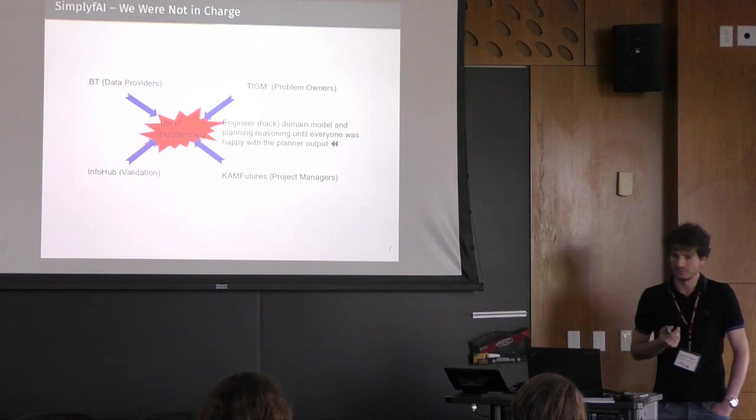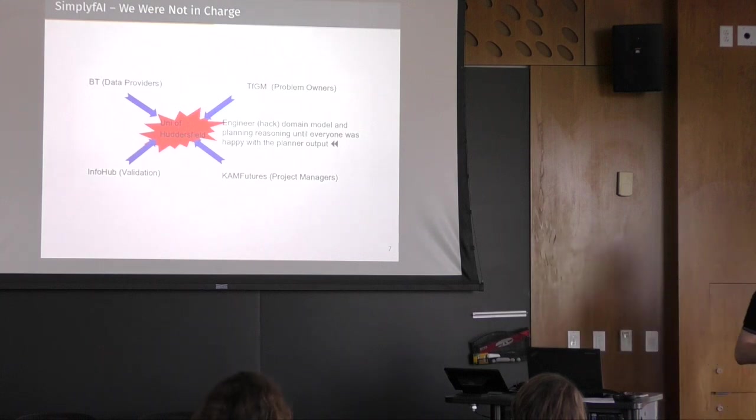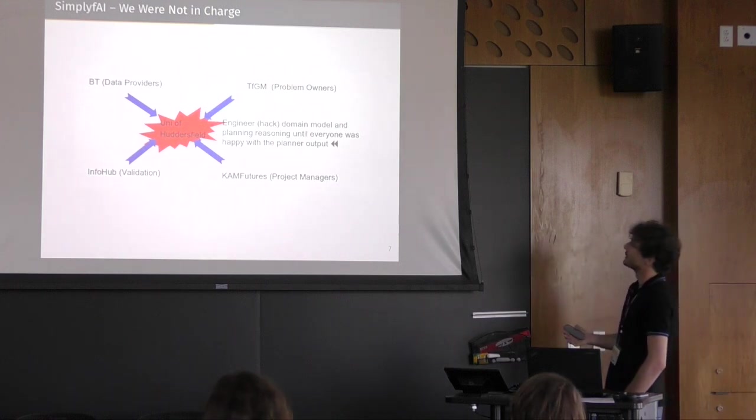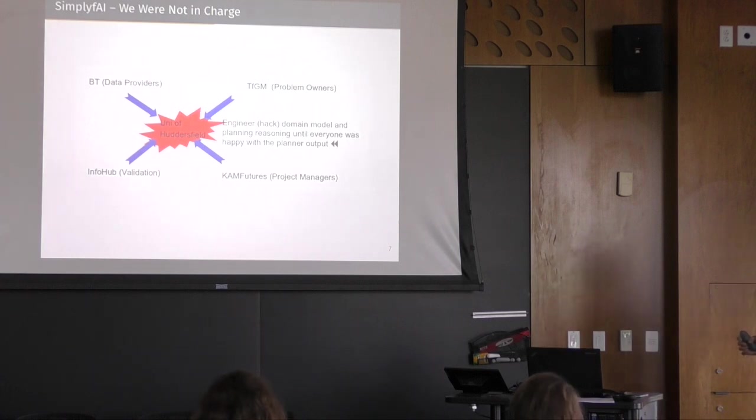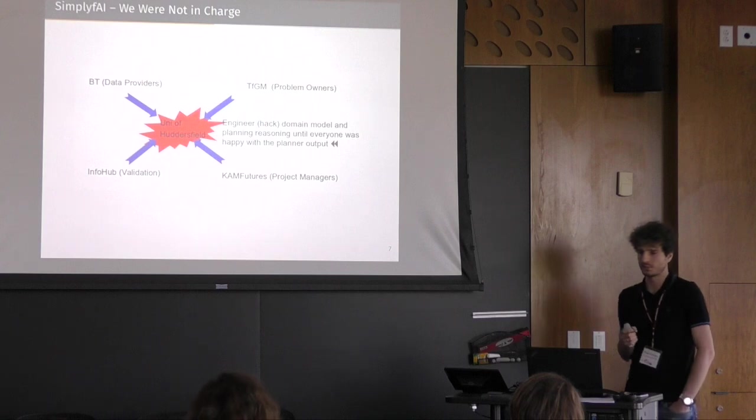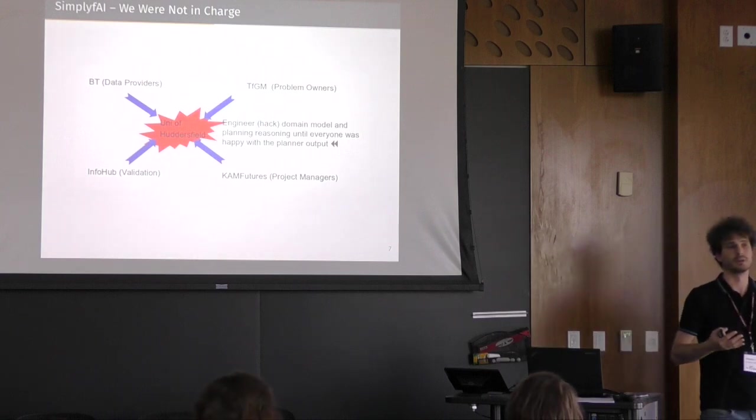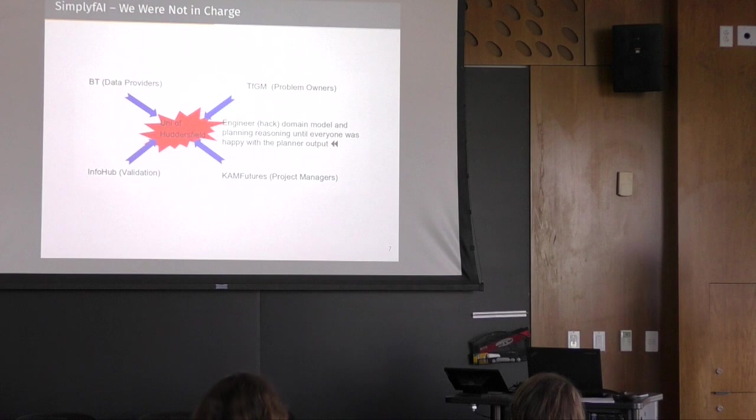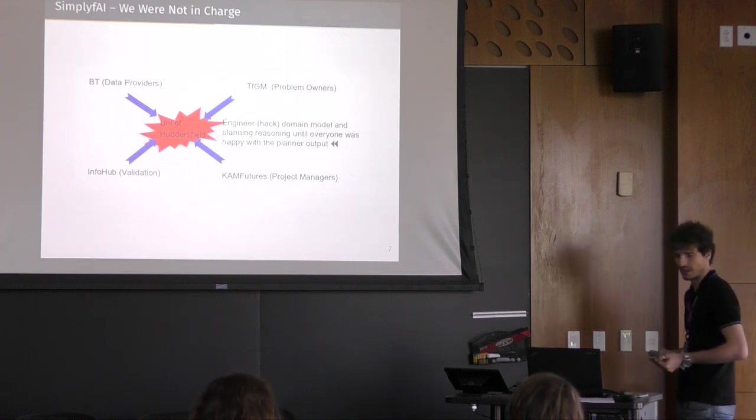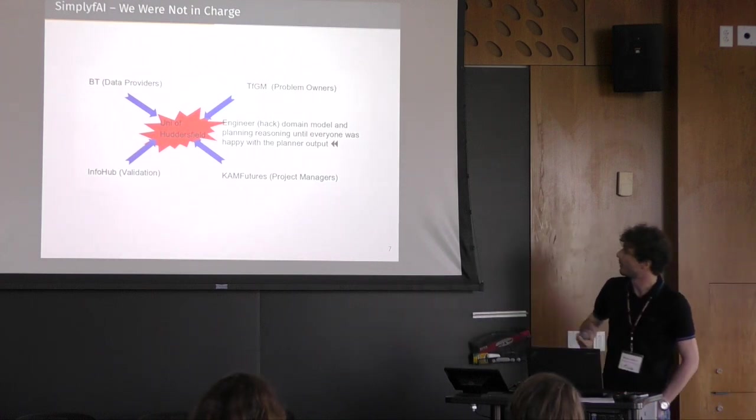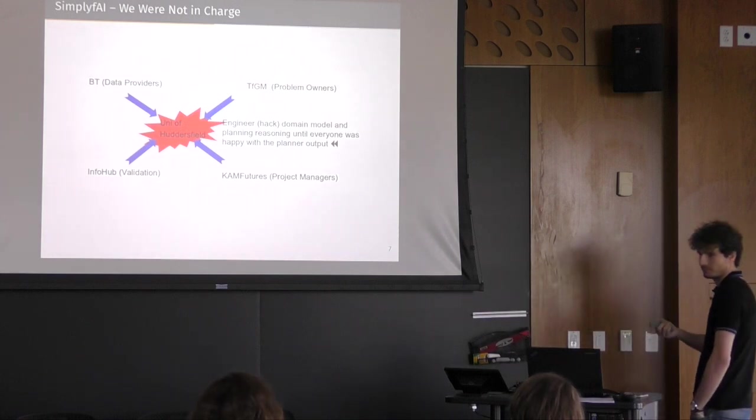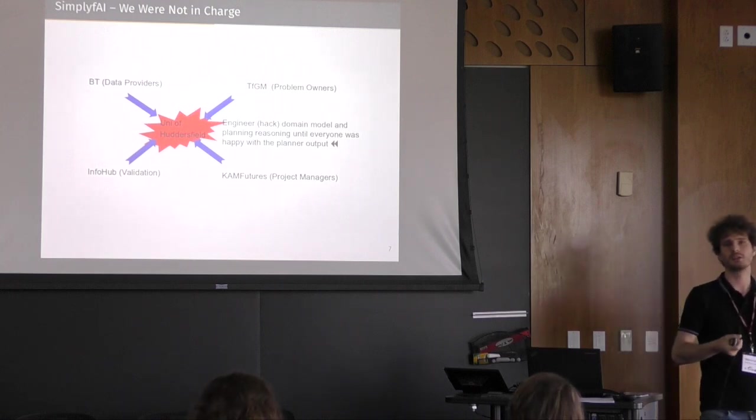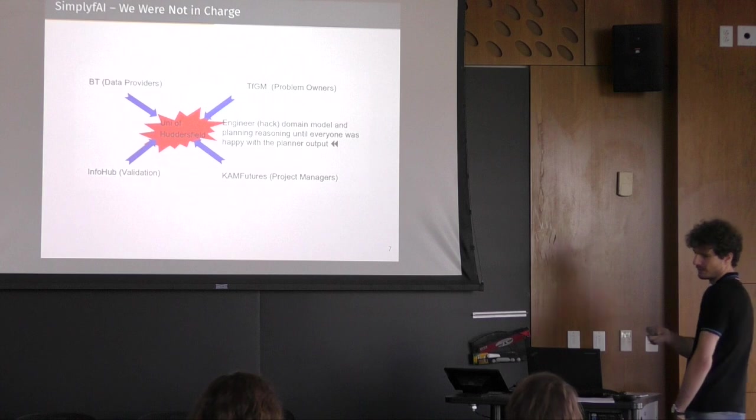And the first thing which was, I would say, shocking for me, probably because it was the first project in which I was heavily involved, is that we, as academics, were not in charge. So these are the different members of the consortium, which were squeezing us in the middle of it. So we got Transport for Greater Manchester, which were the problem owners and the experts of the project, British Telecom, which were liaising with Manchester, and which were the data provider for us, InfoHub Nottingham, which are in charge of the validation, and ComeFuture, which were project managers, so you know it's basically someone which is just sending you emails, saying you have the deadline and you have to deliver yesterday.